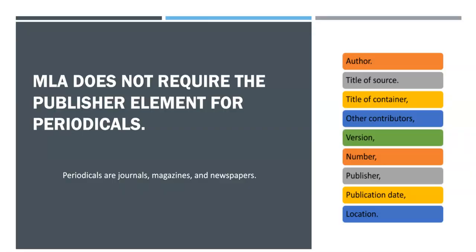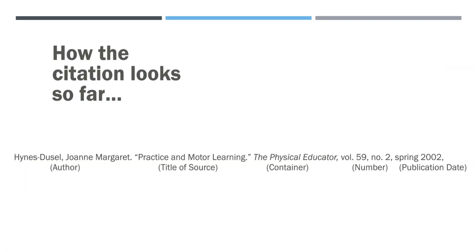You may have noticed I skipped the publisher. For articles and periodicals — that's journals, magazines, and newspapers — you're not required to include the publisher. If you're citing a book, remember to include the publisher before the publication date. So we're back to the article citation, and at this point it includes the author, title of the source, title of the container, the volume and issue numbers, and the publication date.